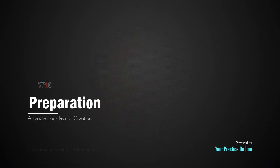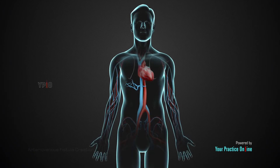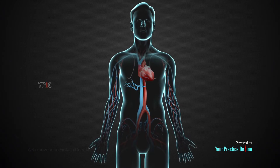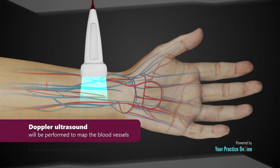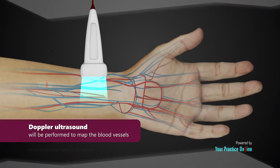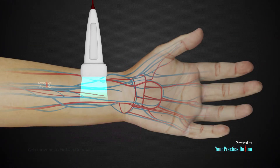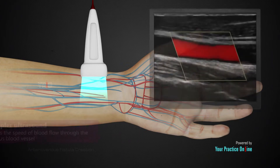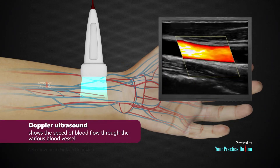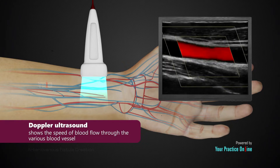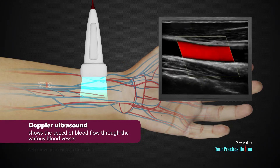In preparation for an AV fistula creation, a Doppler ultrasound will be performed to map the blood vessels. The ultrasound shows the speed of blood flow through the various blood vessels in the area, enabling your surgeon to choose the most appropriate blood vessel for the fistula.